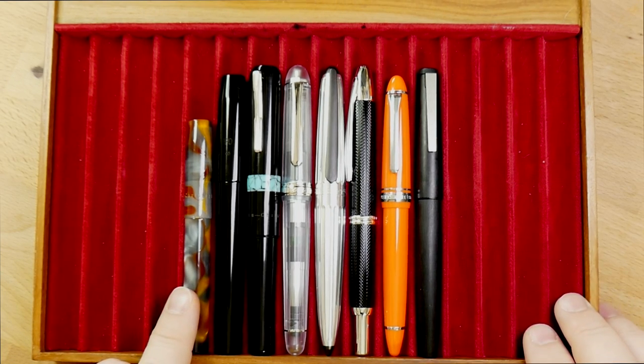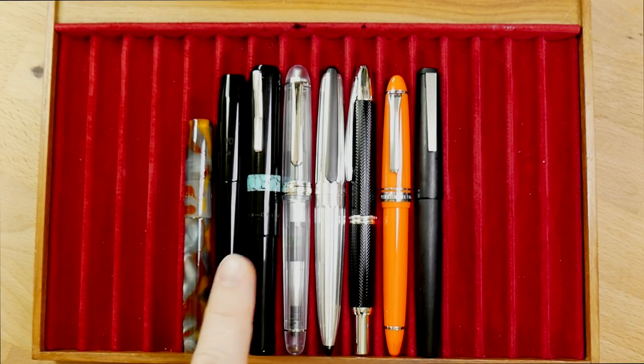Let's look at it next to a bunch of other pens. So firstly, the Franklin Christoph 45, the pocket version. This is the 46. My very favorite Franklin Christoph, the model 40, which is a little bit rare here next to it. Just a skosh longer.